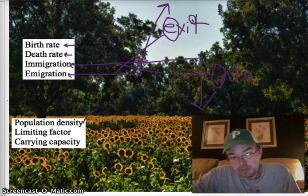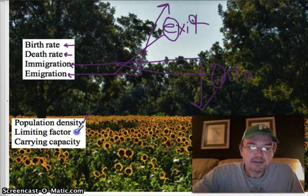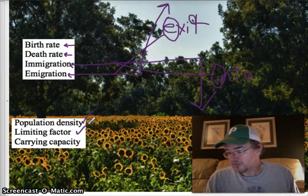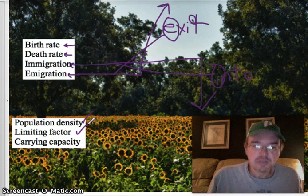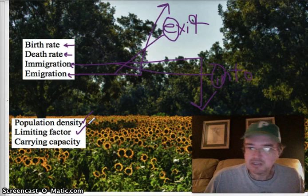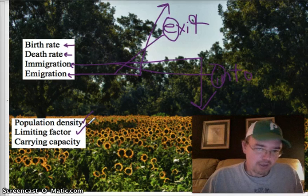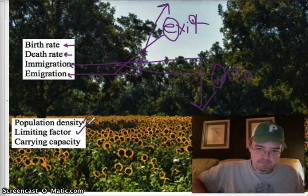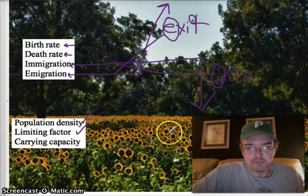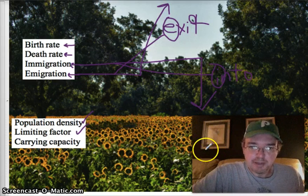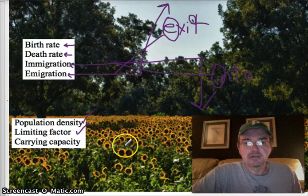Another term is limiting factor. A limiting factor is one of those environmental factors that causes a decrease in population. We mentioned earlier the weather — if you have bad weather for a year or a summer, that would limit the population of the sunflowers here.